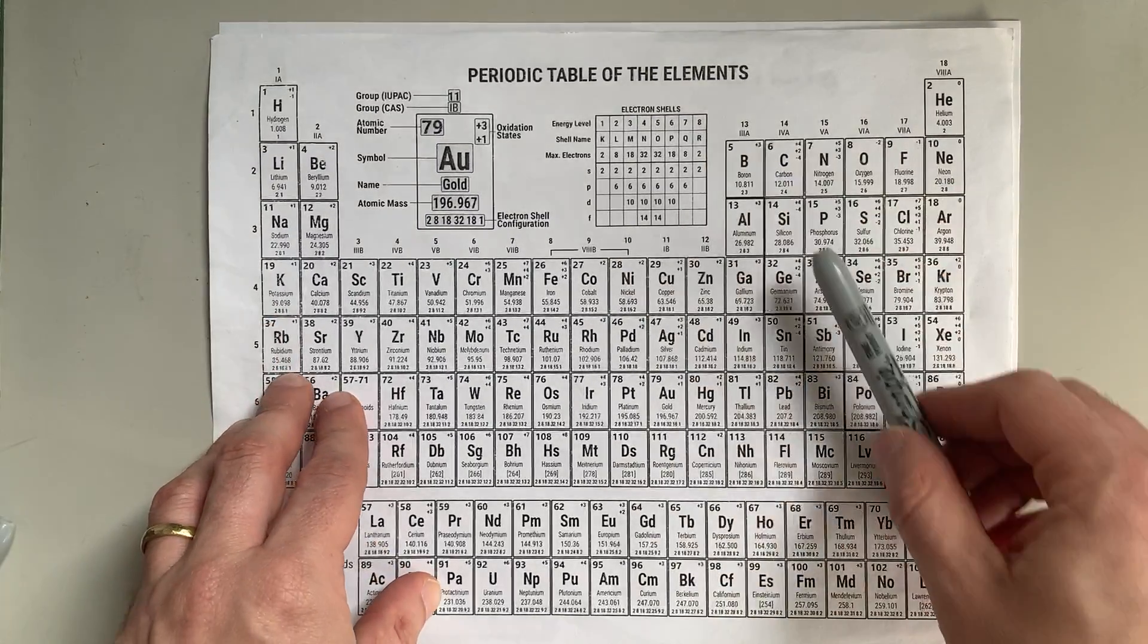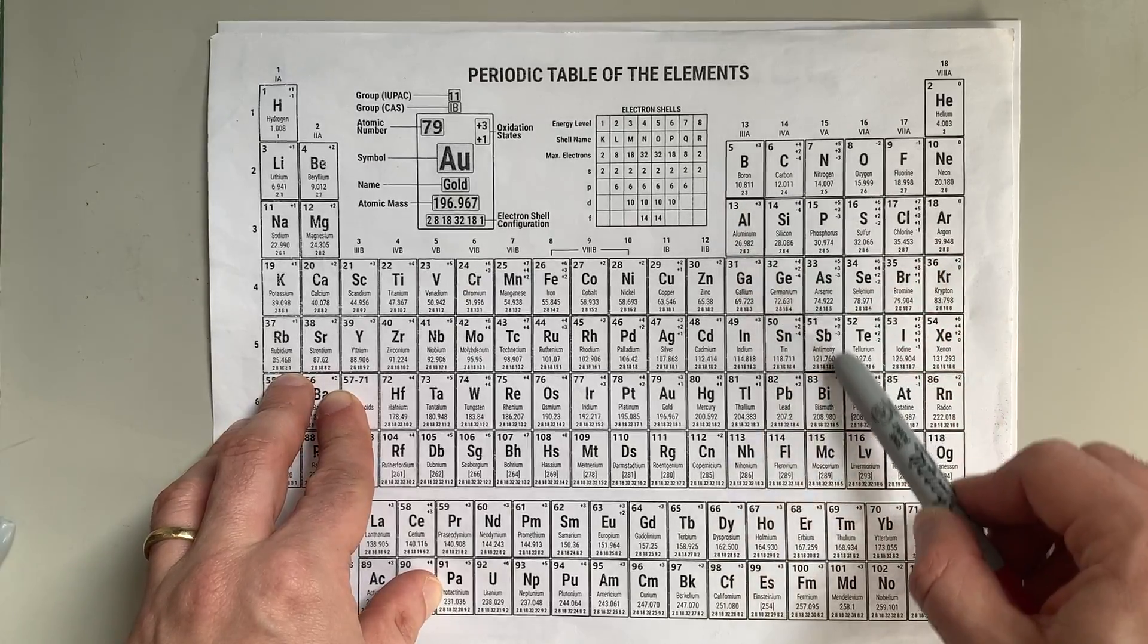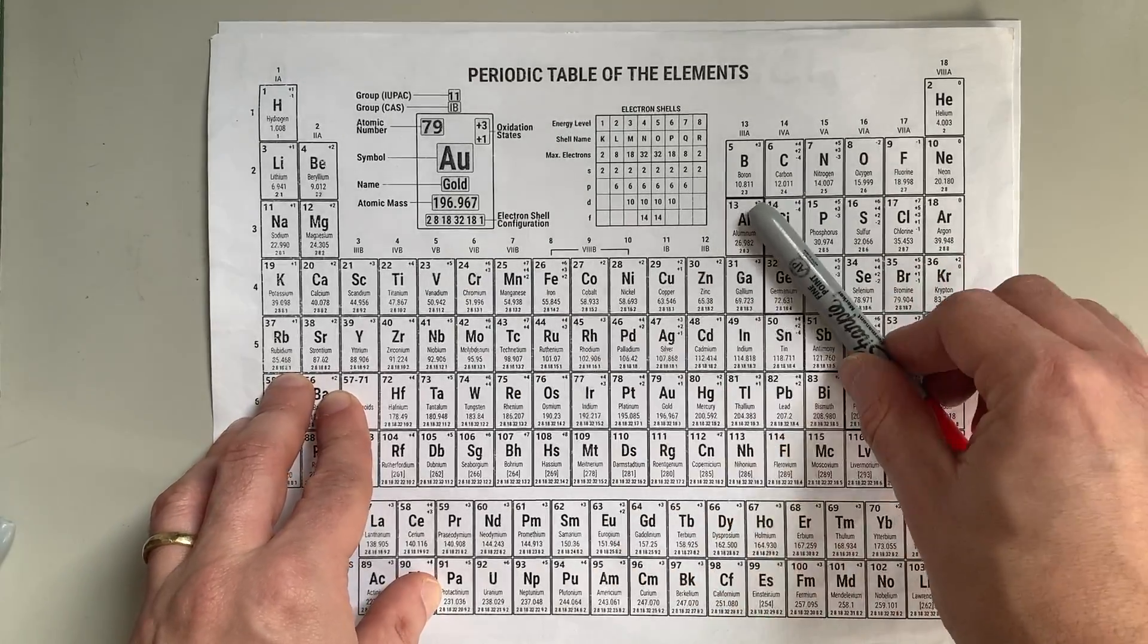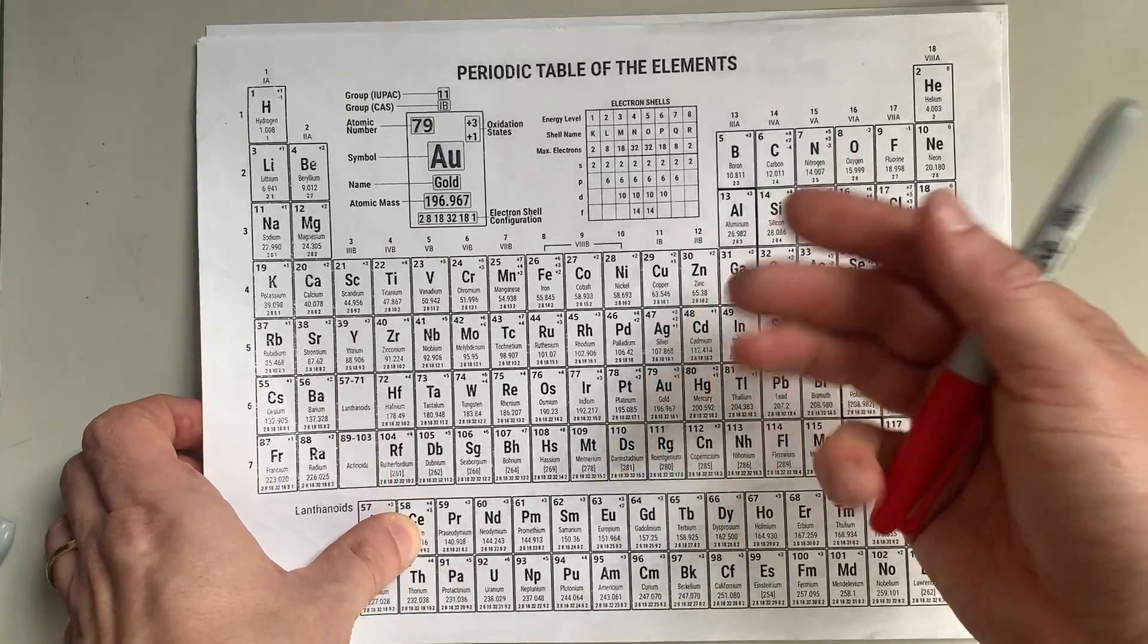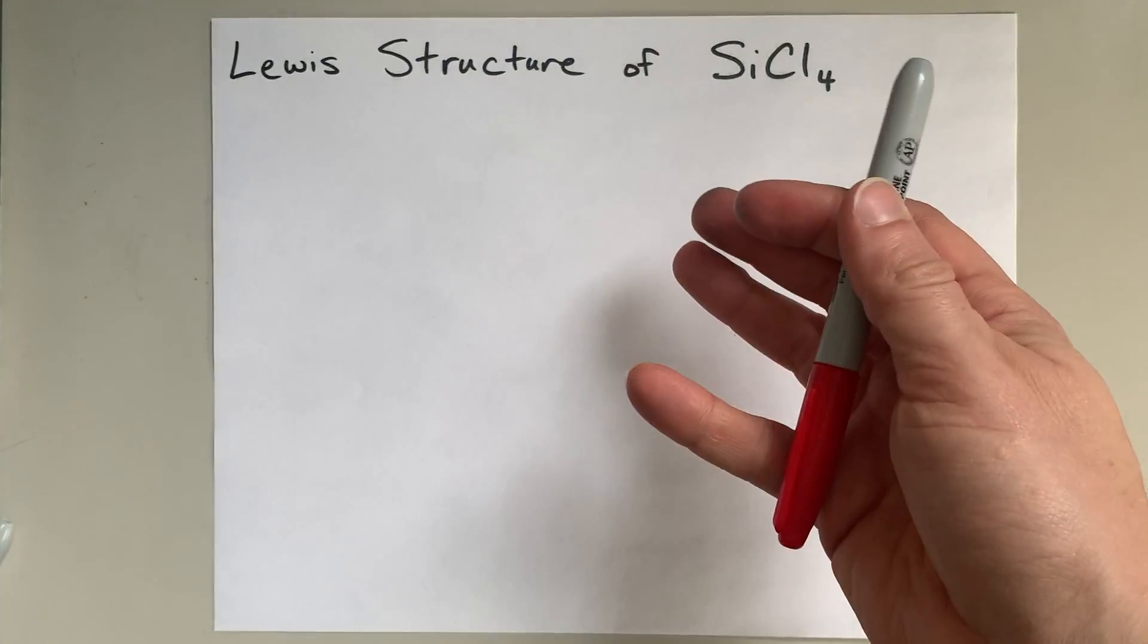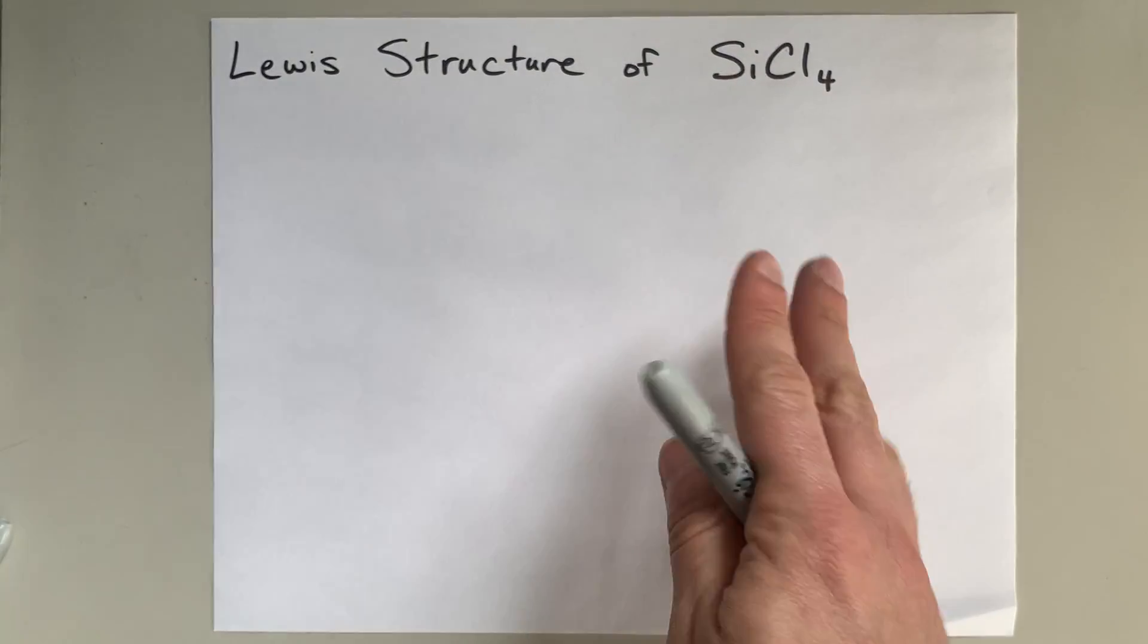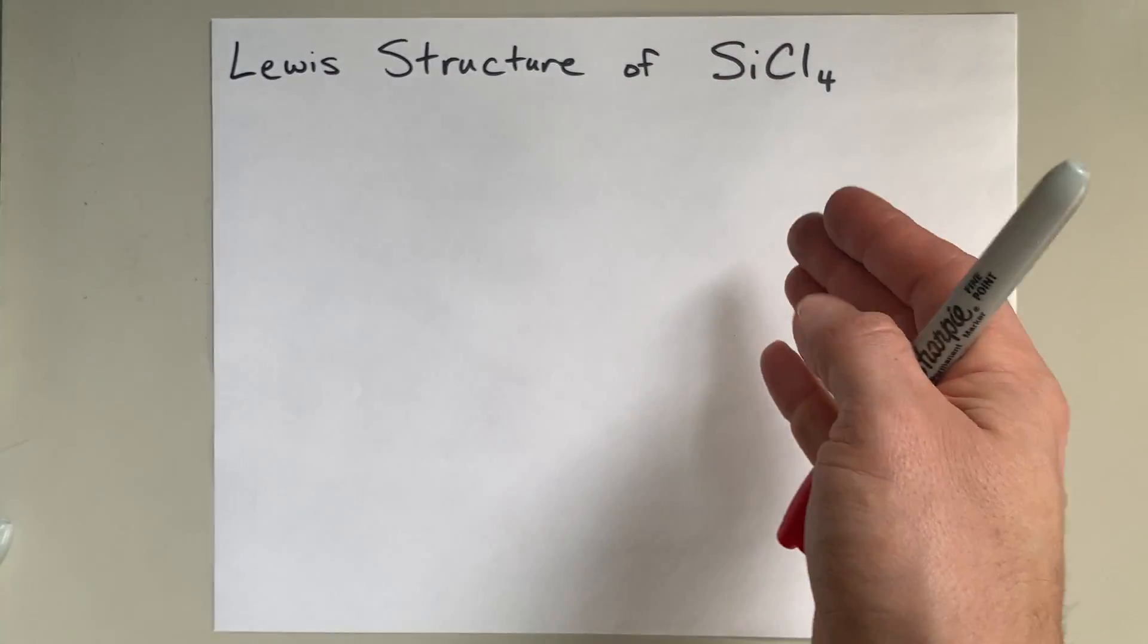Now, if you know anything about the periodic table, you know that there's a staircase here that separates metals from non-metals. Silicon is in between the two. It's a metalloid, or semi-metal, which means it's tough to predict whether or not you're going to form ionic or molecular compounds.